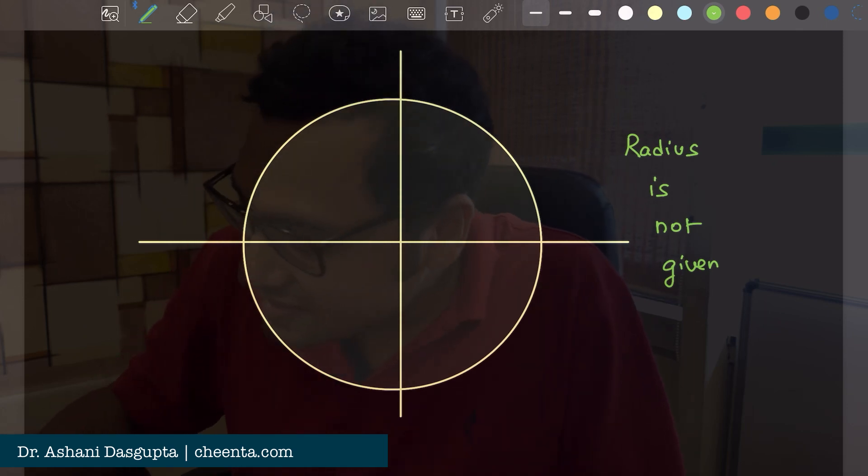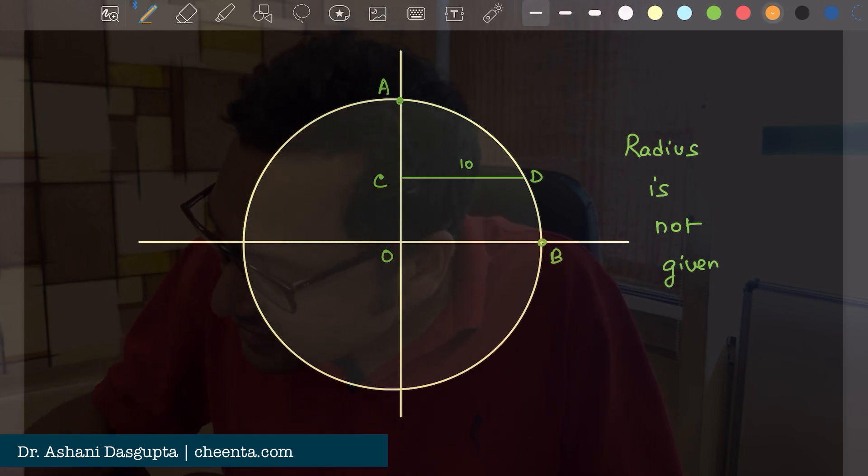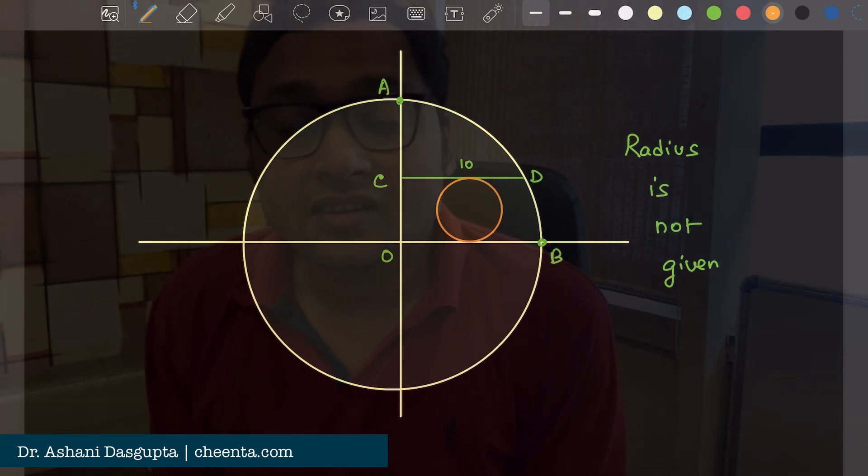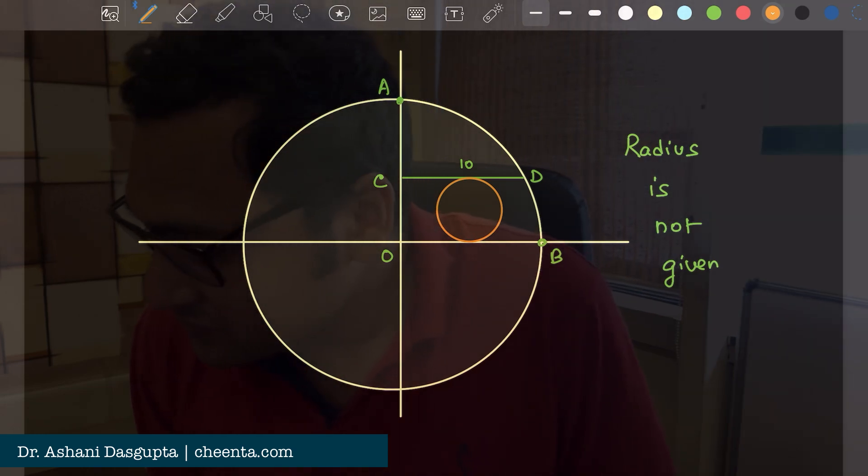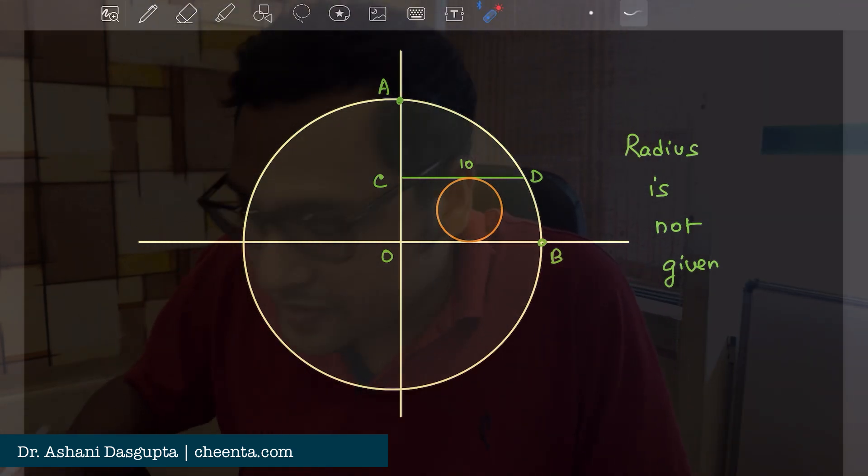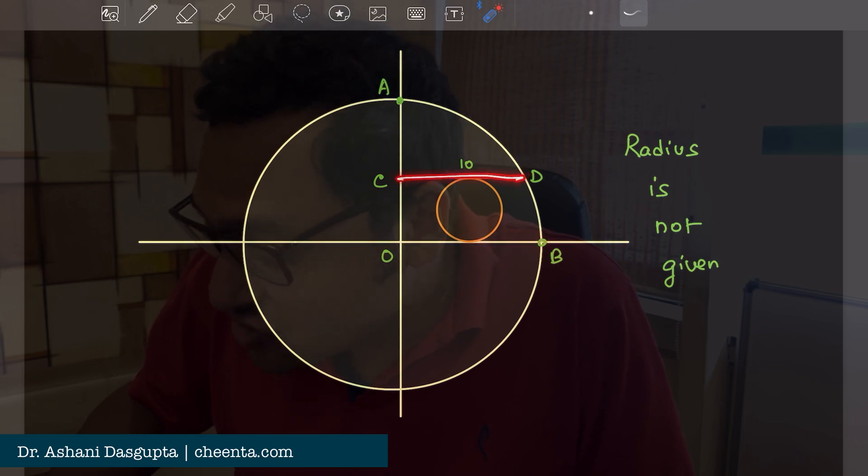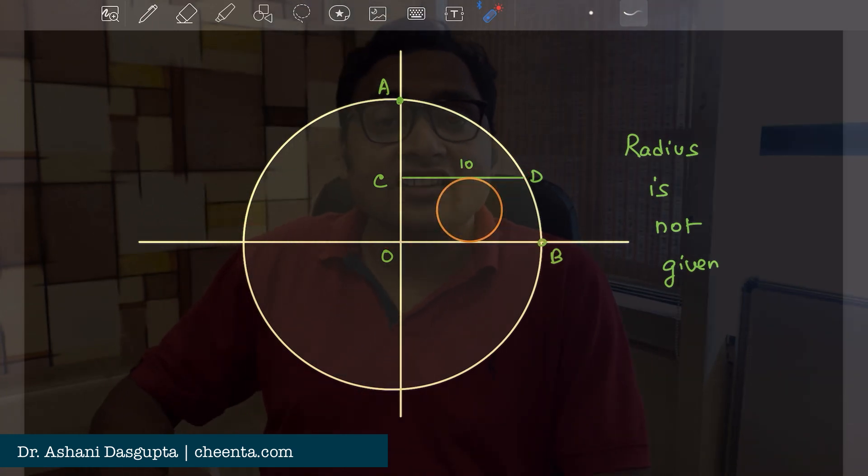What is given is that there is a chord which is 10 centimeters long, called CD. We have a circle here which is inscribed in this bigger circle. In a very interesting way, this diameter and this chord are tangent to the small circle.